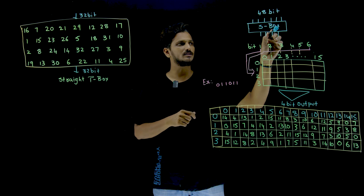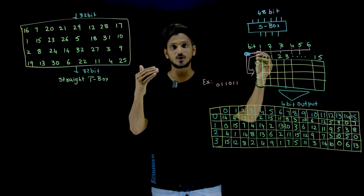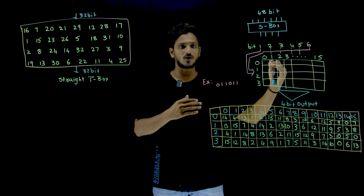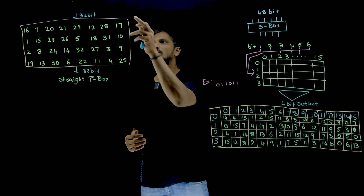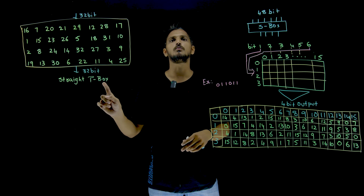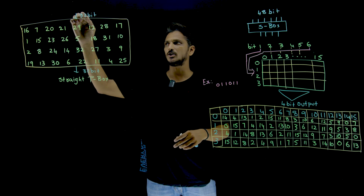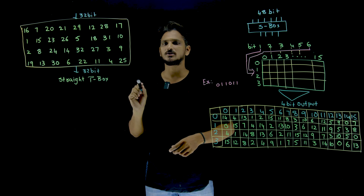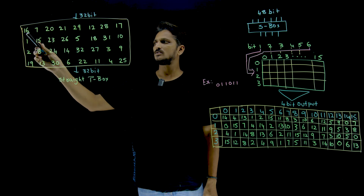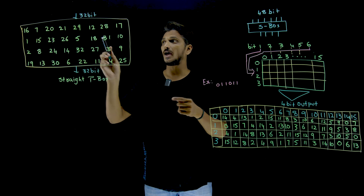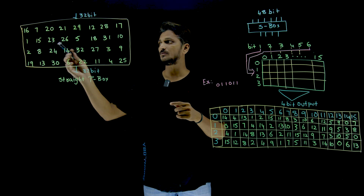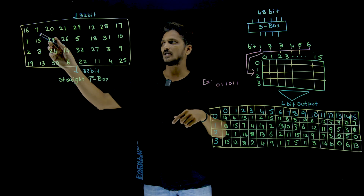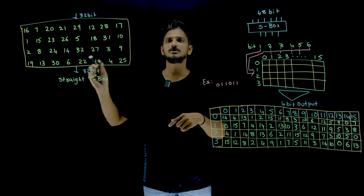So from the 48-bits sent as input to the 8 S-Boxes, we get 32-bits as output. These 32-bits from all 8 S-Boxes are sent as input to the next stage — the P-Box, specifically the Straight P-Box. Straight P-Box means 32-bits as input and 32-bits as output. This is how the straight P-box table looks: 16 means the 16th bit in the actual input is considered as the first bit in the output; the 7th bit in the input is considered as the second bit in the output.